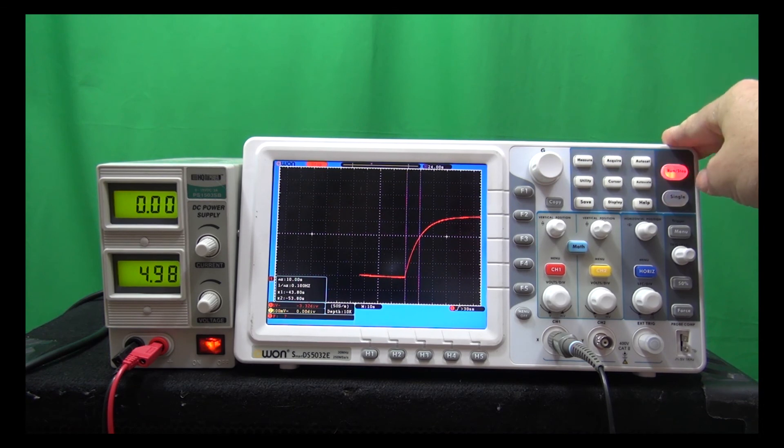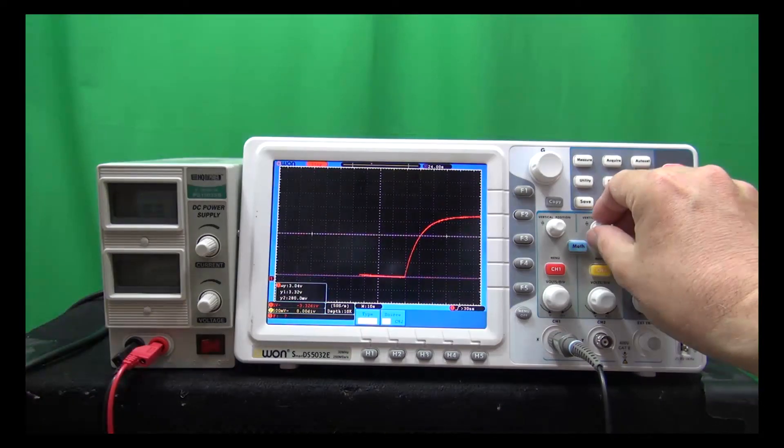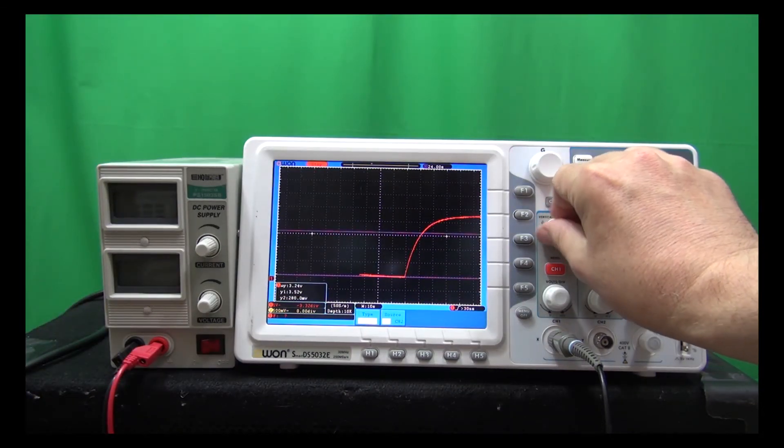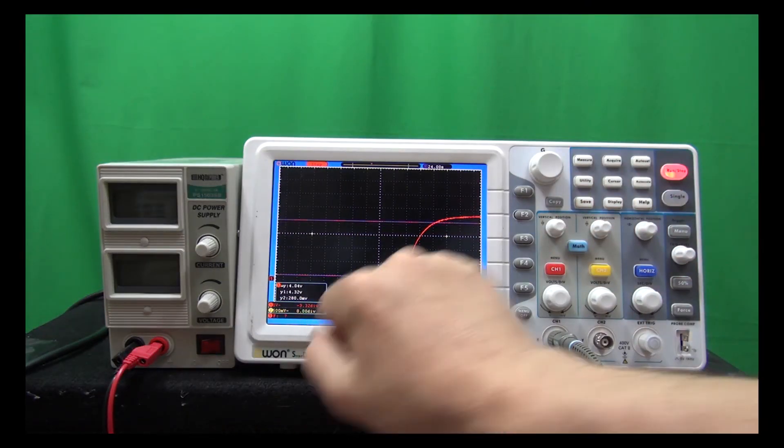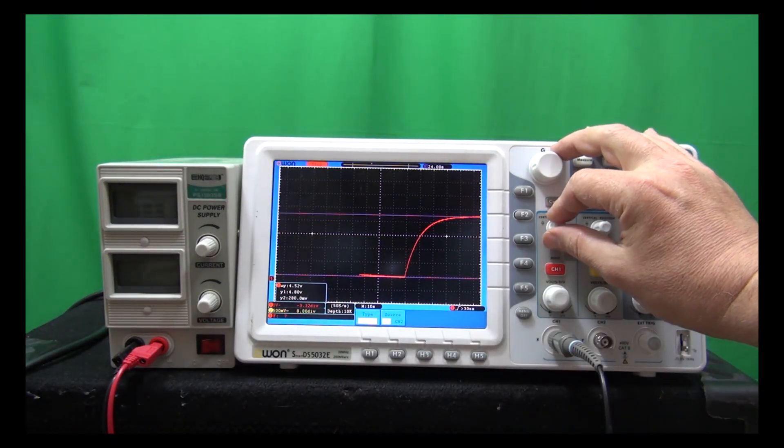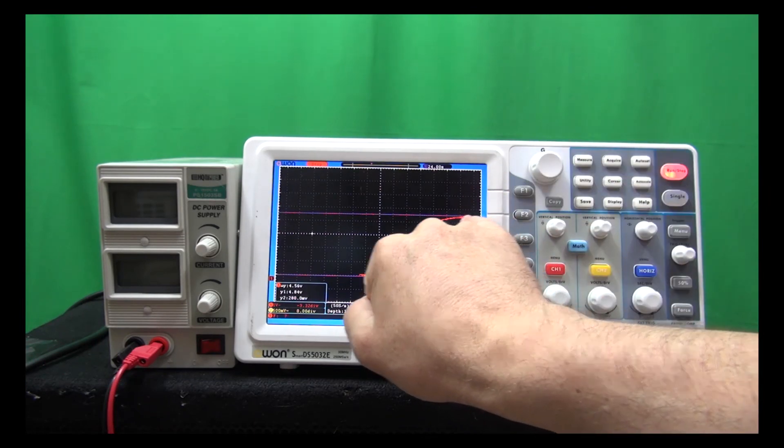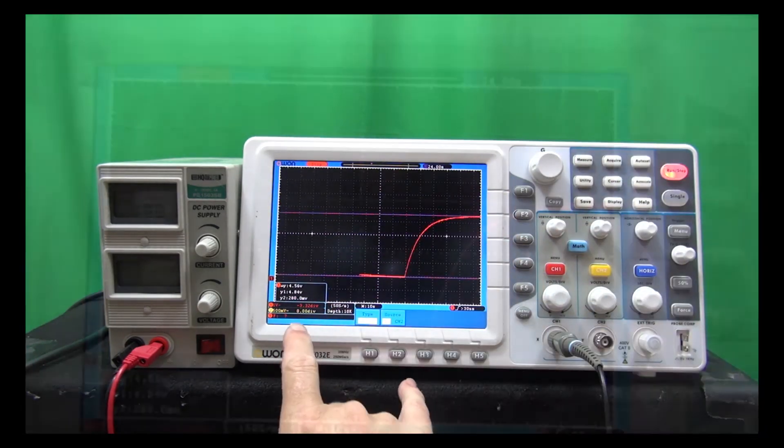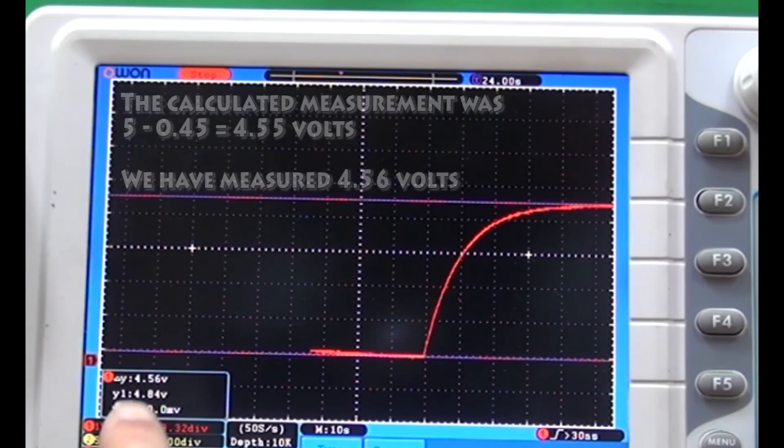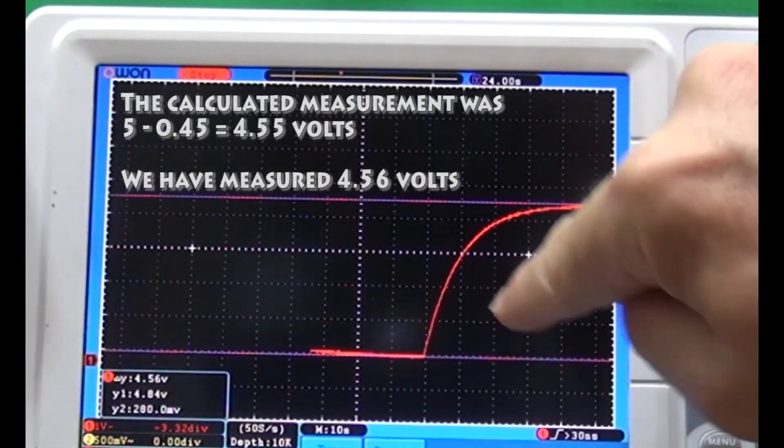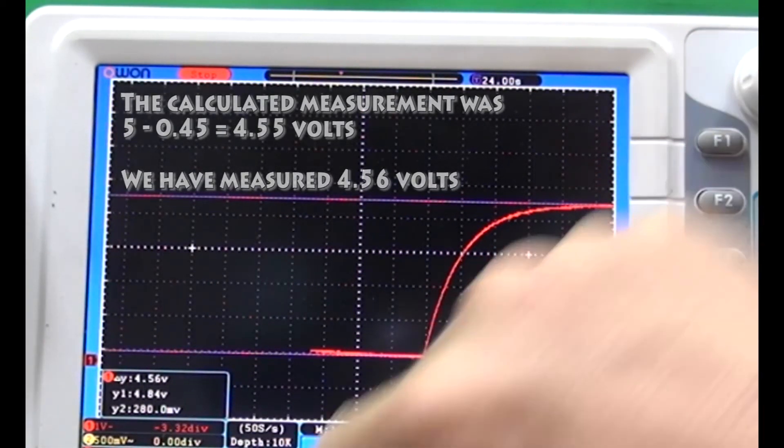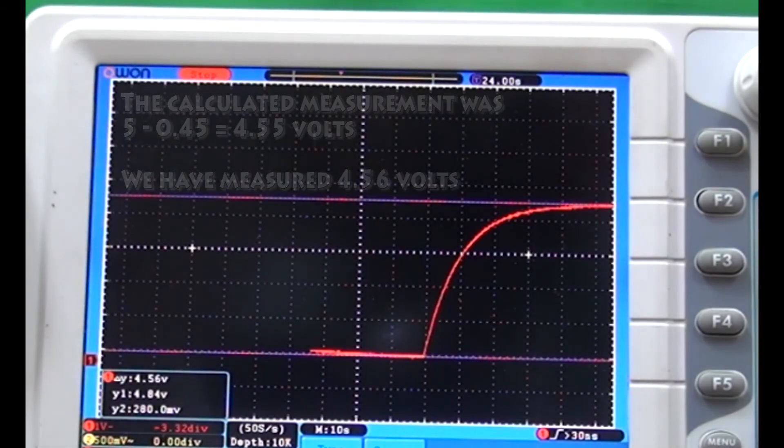Hit the stop button. Adjust the cursor as required. So we measure the voltage at ground and how high it gets. Just touching the peak there. And the voltage measured is the change in Y, changing the Y dimension. And we measure 4.56 volts.